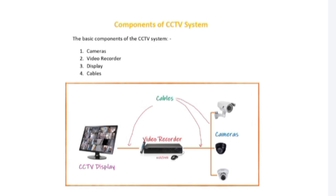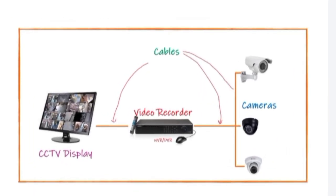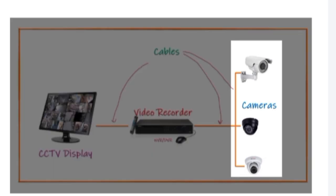The four components are cameras, video recorders, display units, and cables. See in this diagram how these four components are interconnected to perform a desired function of surveillance. These are the cameras — different types of cameras used to take images or videos for a specified area.